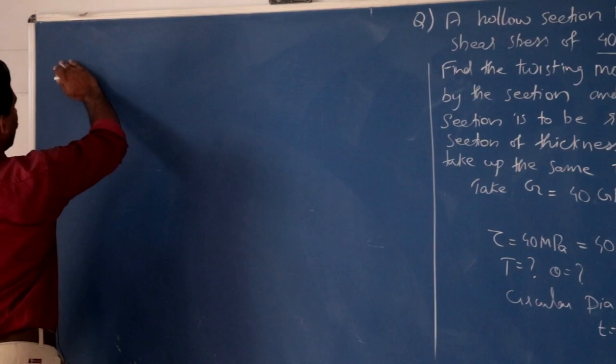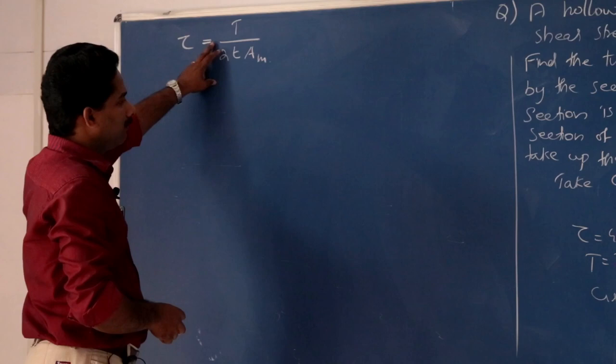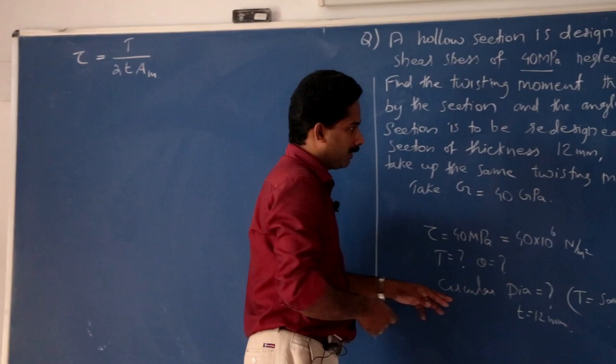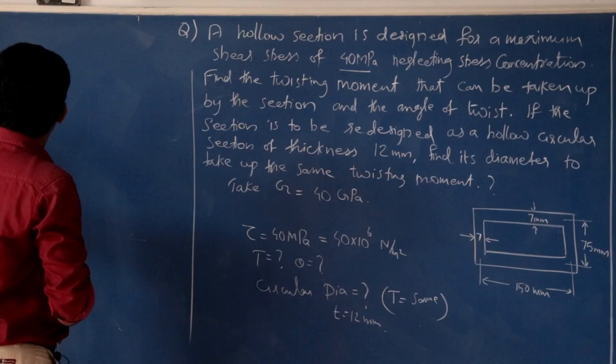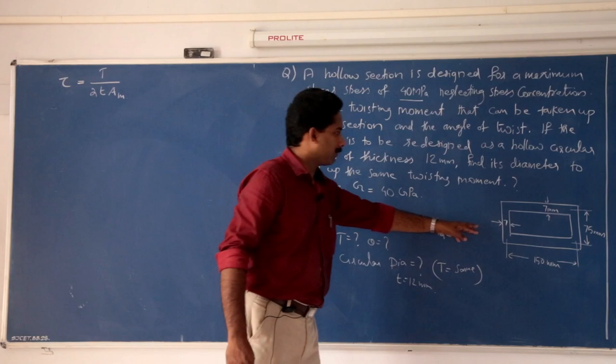Tau is equal to T divided by 2t into Am. It is the equation. It is equal to 40 into 10 raised to 6 Newton per meter square. Thickness from the figure is 7 mm. So t equals 7 mm. Then Am is the mean area inside the median line.